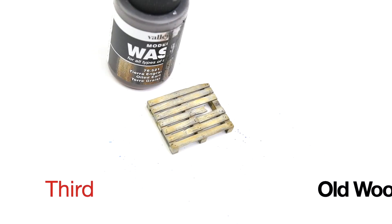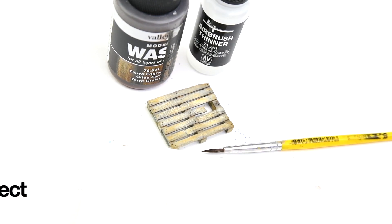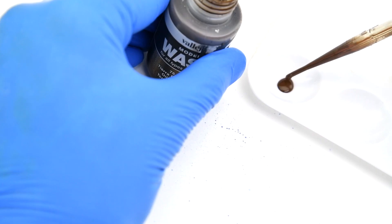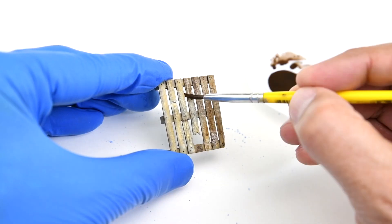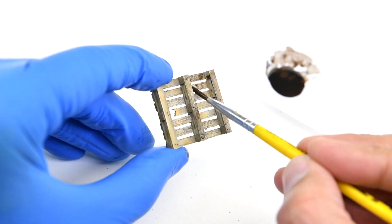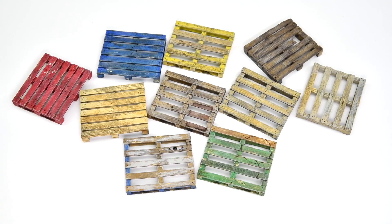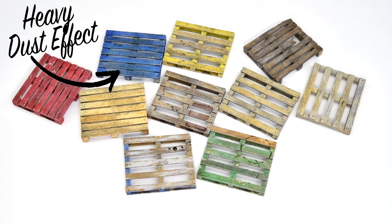If you want to portray a worn out and old pallet that perhaps has not been used anymore for a while, this last technique comes in handy. Very easy to apply using a wash from Vallejo, diluted with airbrush thinner to achieve the look you are after. Don't forget to check out my previous video, which shows a few different techniques to apply rust stains, oil marks, and heavy dust effect to the pallets.